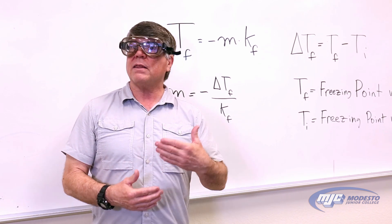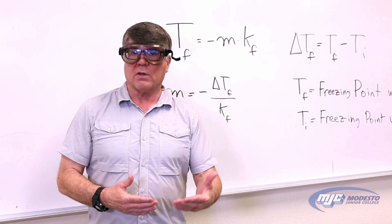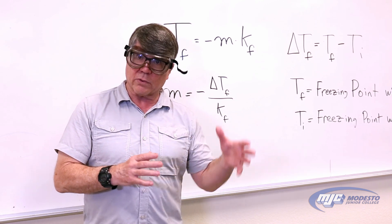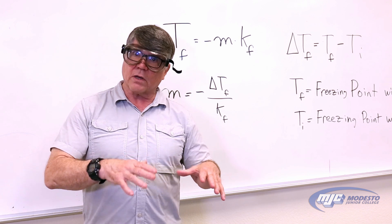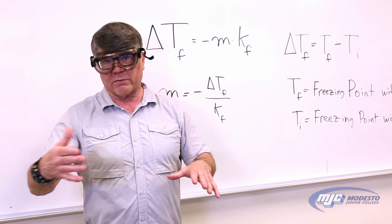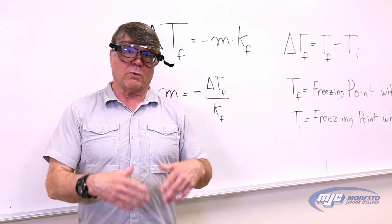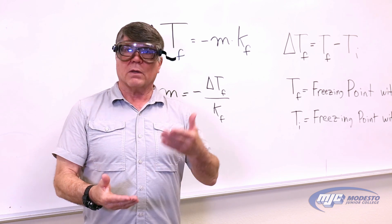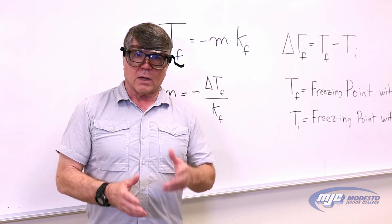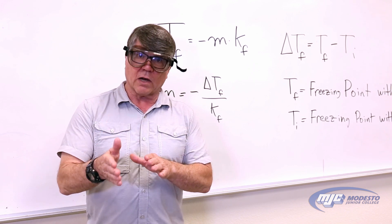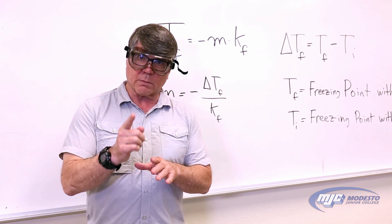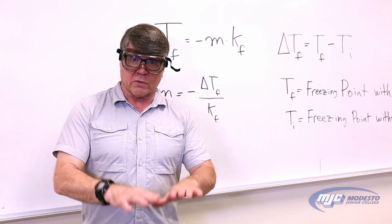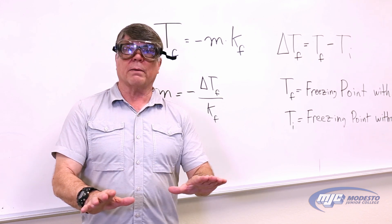Whenever you dissolve something in that substance, you have a solution. Now that solution consists of a solute — the thing that's dissolved in it — and the solvent, the thing that it's being dissolved in. So if you put some salt into water, what would be the solvent? Salt would be the solute. And whenever you add a solute to a solvent, the freezing point — the melting point of that solvent — goes down. It blows every single time.